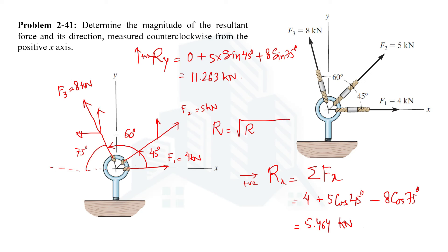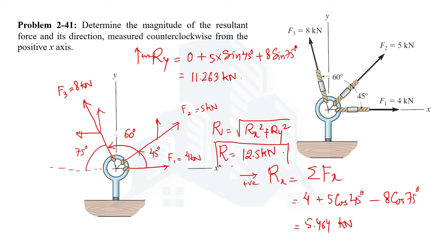Now that we have both the x and y components, we use the formula for the resultant magnitude: R = √(Rx² + Ry²). Substituting the values of Rx and Ry, we get the resultant force R = 12.5 kilonewtons. This is the magnitude of the resultant force.